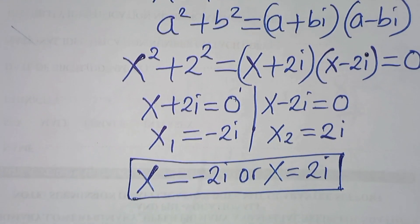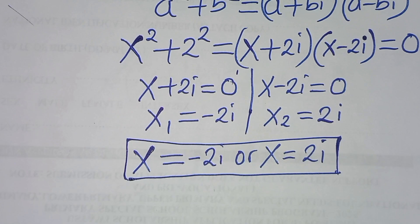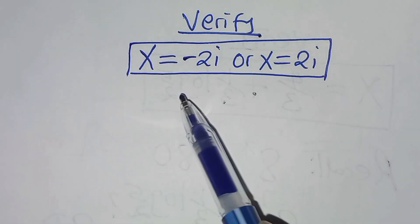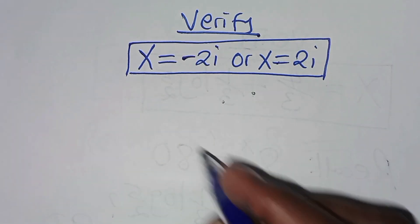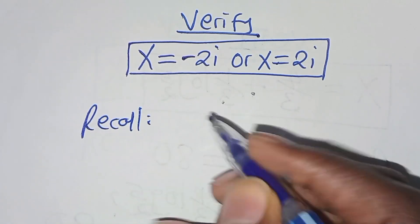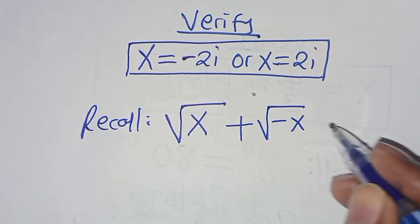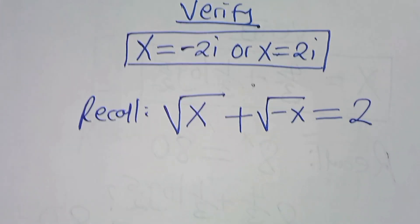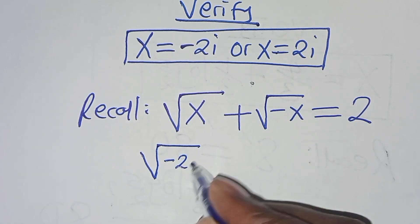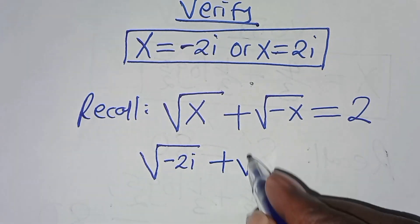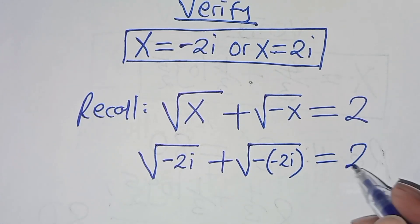Now let's verify that these values of x satisfy the equation. Let's verify that x equals minus 2i or x equals 2i satisfies square root of x plus square root of minus x equals 2. Substituting the first value x equals minus 2i, we have square root of minus 2i plus square root of minus times minus 2i, which should give us a value of 2.